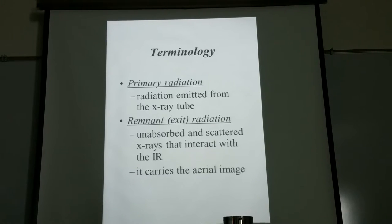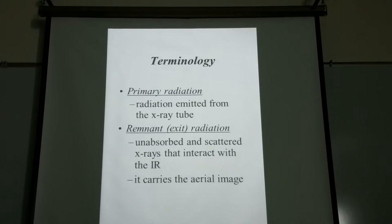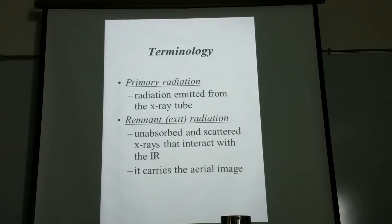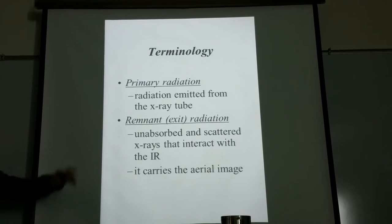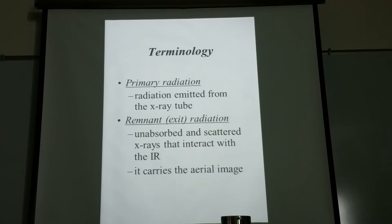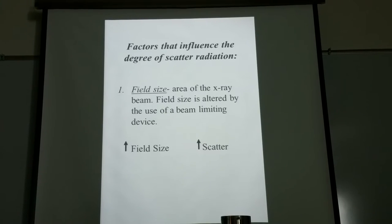The primary radiation — electrons traveling from cathode to anode — produces x-rays of various energies. When primary radiation interacts with an object, scatter radiation will also result, deflecting in all directions with lower energies. Once the primary radiation interacts with the patient, it becomes a combination of both primary radiation and scatter radiation — also called secondary radiation. That is your remnant radiation, which carries the aerial image prior to processing.